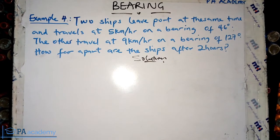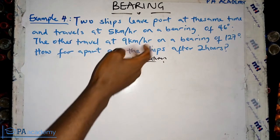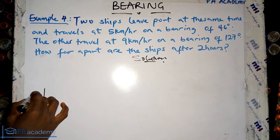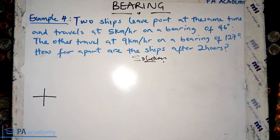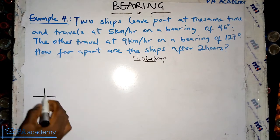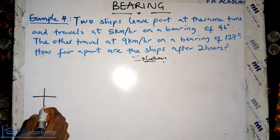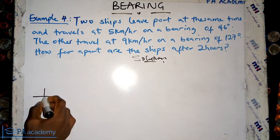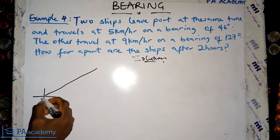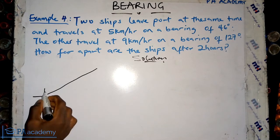The first thing we are going to do with any bearing question is to draw a diagram that represents what the question is saying. Two ships leave port at the same time. Let's pick a point for the port. We are measuring bearings clockwise from north — I've explained this in previous parts. A bearing of 46 degrees should be around this angle, so this is our 46 degrees.